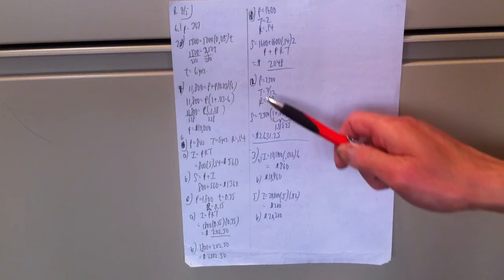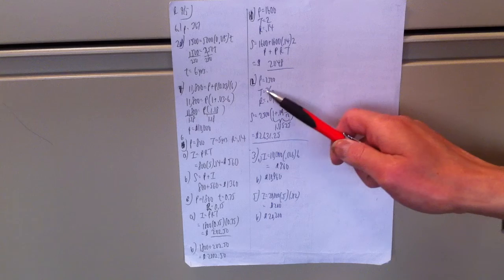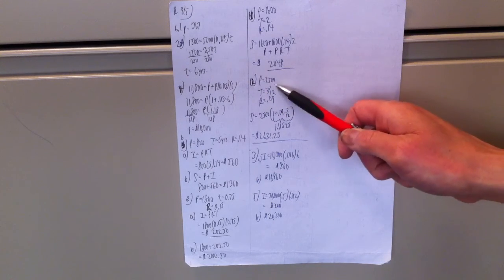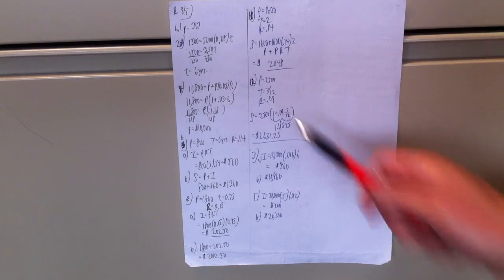Number 12. P is 2,500. Time is 7/12. 7 months is 7/12 of a year. T always has to be in years. R is 0.09.